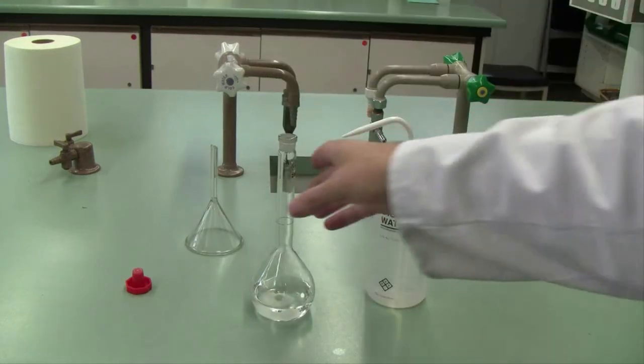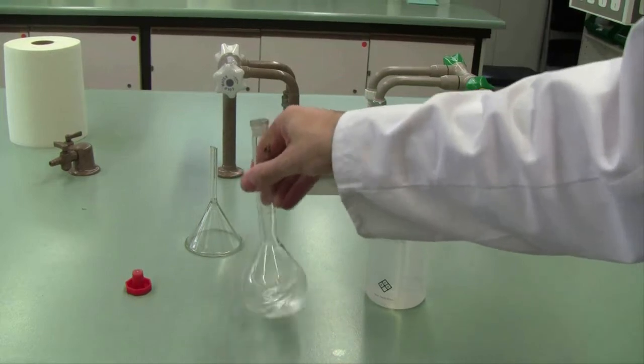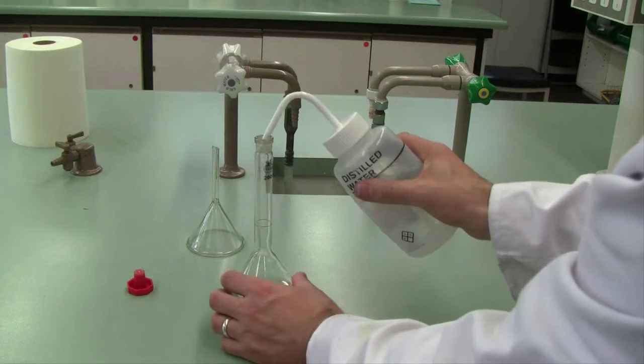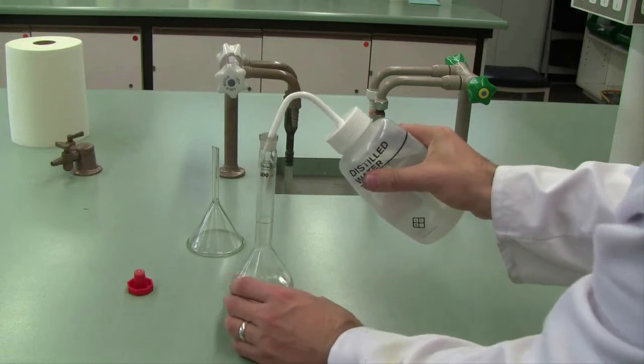Then once you've done that, we make the standard flask up to the 200 mL mark by the normal method. Make sure you mix as you go, add a bit more distilled water to it, mix it further.